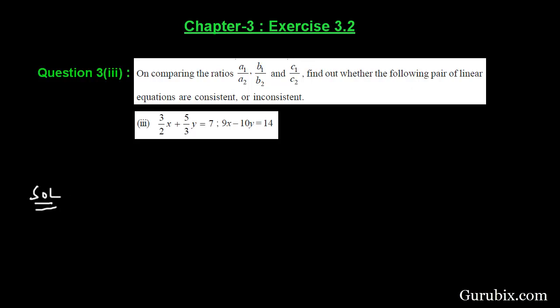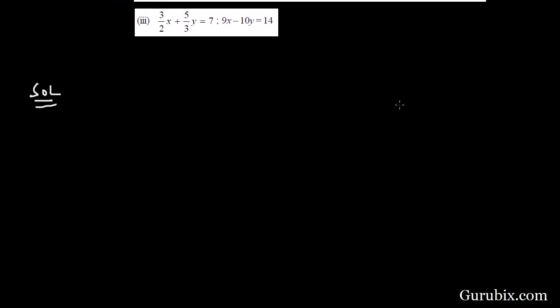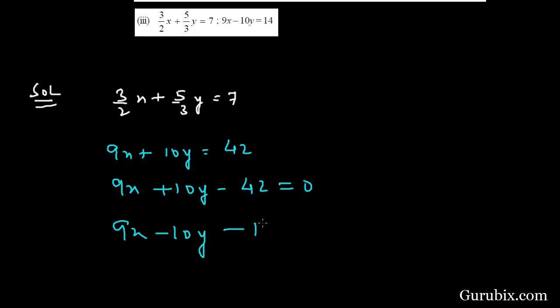First of all, we shall write both the equations of the pair in its standard form. The first equation is (3/2)x + (5/3)y = 7. Now we shall multiply both sides of the equation by 6, then we have 9x + 10y = 42. This means the standard form of this equation will be 9x + 10y - 42 = 0. The second equation is 9x - 10y - 14 = 0.